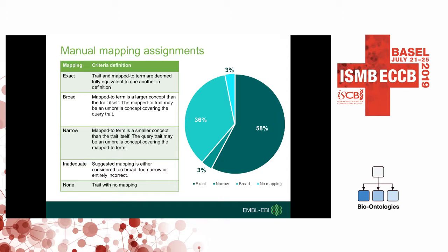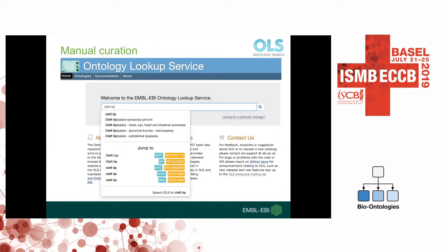The remaining traits had no current mapping in EFO. After the first phase of automated mapping, traits with inadequate mappings and those with no mapping at all were searched for using OLS — a search repository for looking up ontology terms and browsing ontologies. Manual mapping occurred in three stages: first searching EFO for existing term mappings, then searching ontologies imported into EFO, and finally searching all 200+ ontologies in OLS. Traits with no adequate mapping were then split into those requiring new terms in EFO, and those considered unmappable requiring further work.